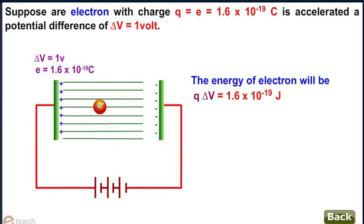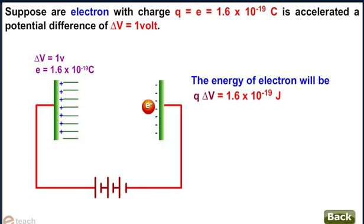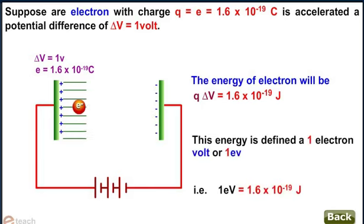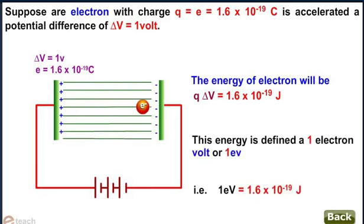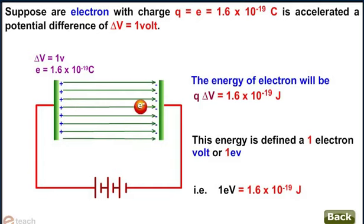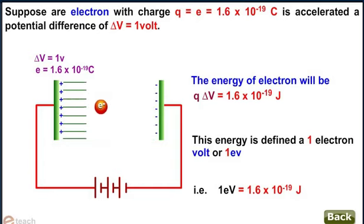Since delta V equals 1 volt and the charge on electron equals 1.6 into 10 to the power minus 19 coulomb, then the energy of electron will be Q into delta V which equals 1.6 into 10 to the power minus 19 joules. This energy is defined as 1 electron volt or 1 eV, that is 1 eV equals 1.6 into 10 to the power minus 19 joules.